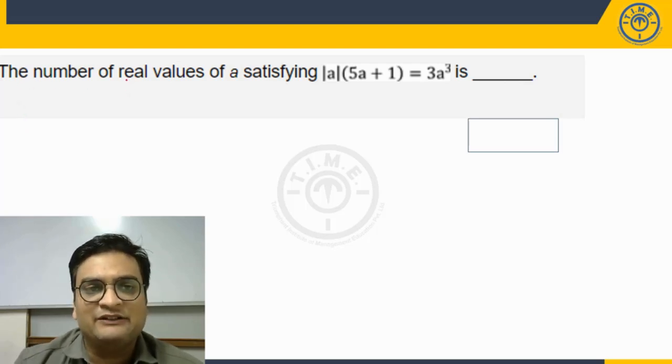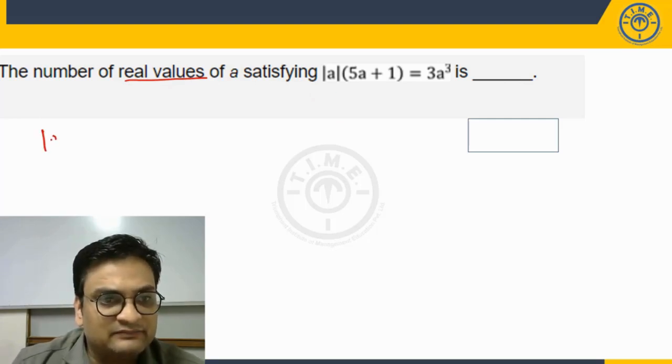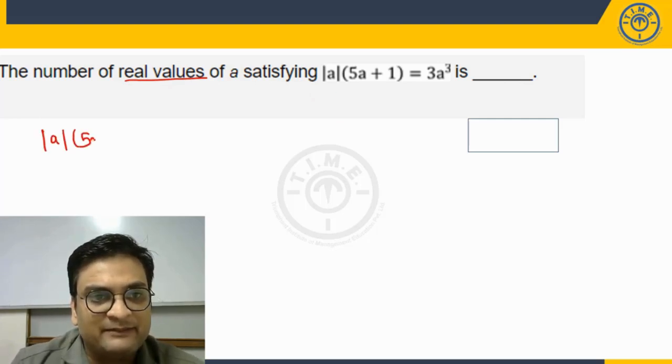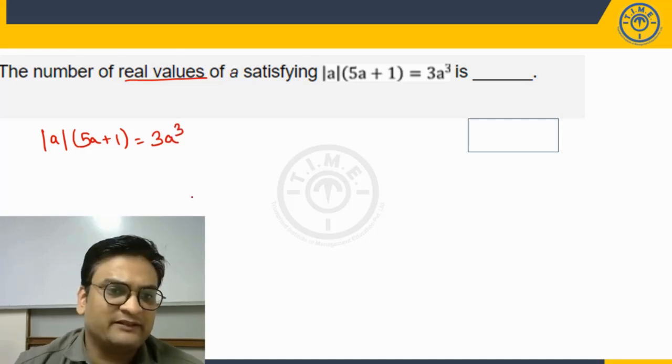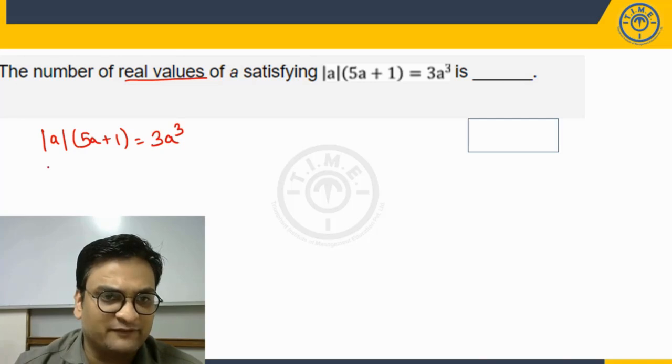It says the number of real values of a satisfying mod a into 5a plus 1 is equal to 3a cube. So let us assume since there is a mod involved, let us try to get rid of the mod first.